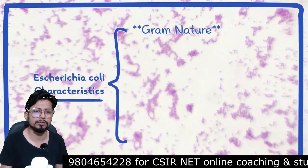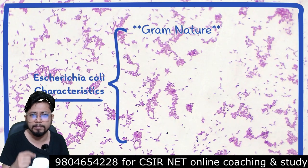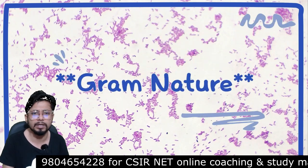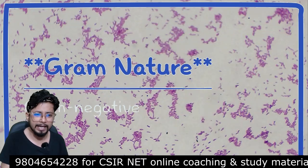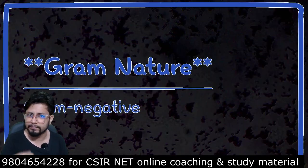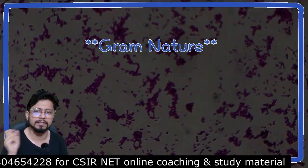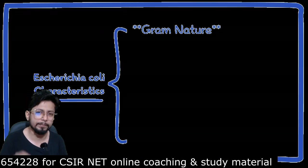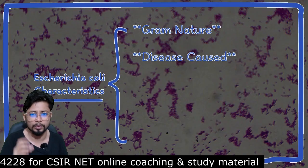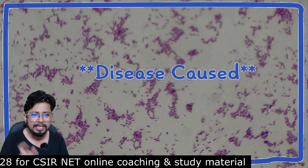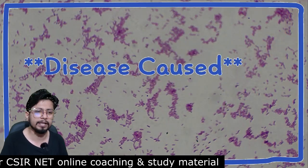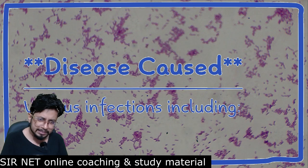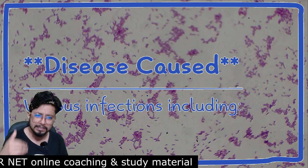The very first thing we want to talk about is the gram nature of E. coli, and we all know that E. coli is gram negative in nature. The second important parameter we want to talk about is the diseases that E. coli causes — and E. coli causes various kinds of diseases.